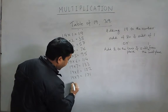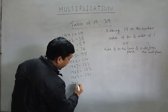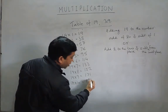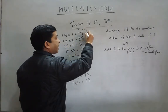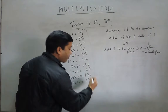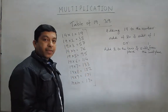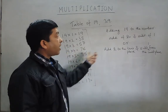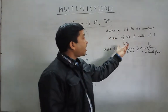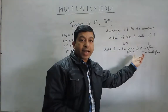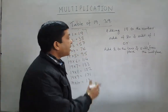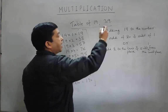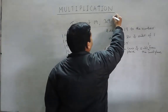Then 19 into 7 becomes 133, 19 into 8 becomes 152, 19 into 9 becomes 171, and 19 into 10 becomes 190. So we have written the complete table of 19. We have not memorized it — we have understood that the table of 19 must be something like this.